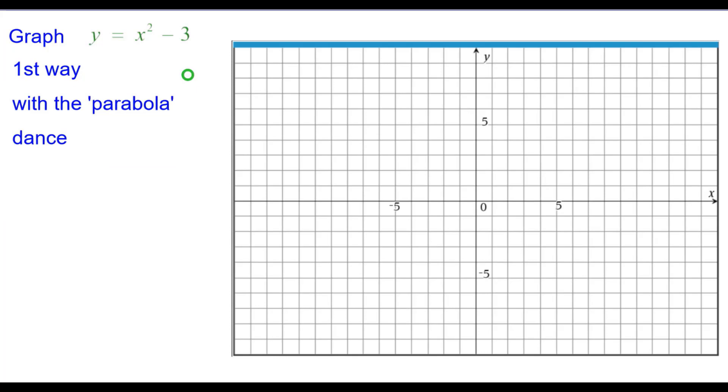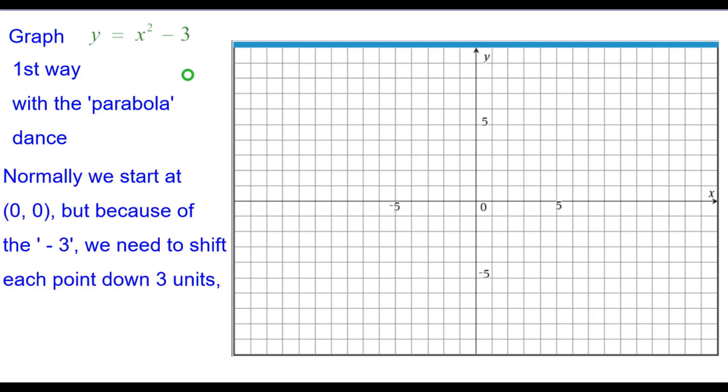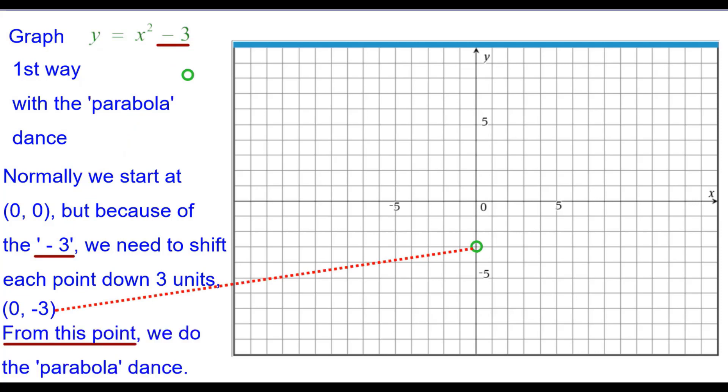So you're going to graph this using what I call the parabola dance. Normally we would start at the origin, but because of the minus 3 we need to shift each point down 3 units. So we're going to start at 0, negative 3 and from there we'll do the parabola dance which is right 1 up 1 because 1 squared is equal to 1.